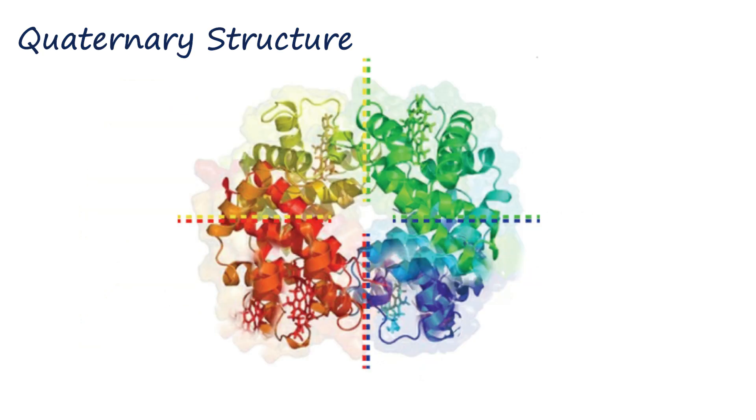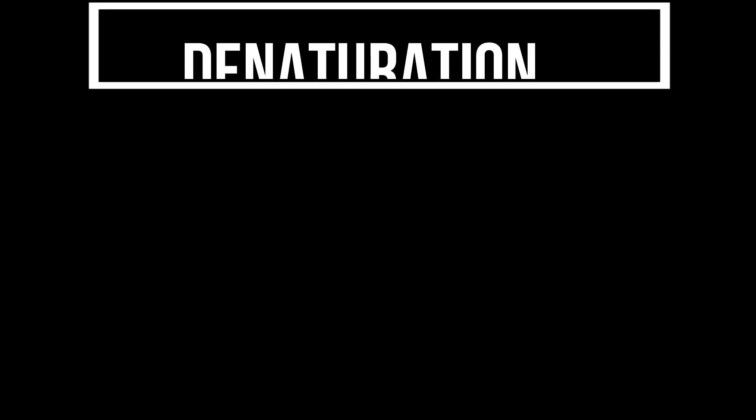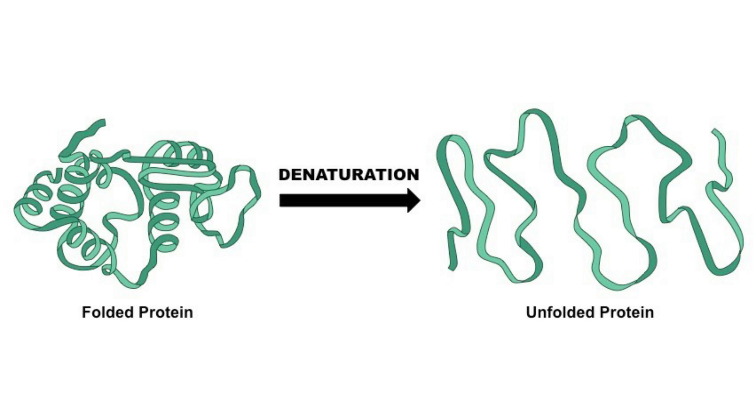Some bigger proteins have a quaternary structure, in which two or more of the tertiary structures will come together and make one big protein. Proteins can also be denatured. If a protein is placed in an unfavorable environment where factors such as pH, temperature, salt concentration, etc. are not ideal for the protein, the bonds that hold the protein together can break and change the structure of the protein. This loss of structure means that the protein will not be able to function properly.